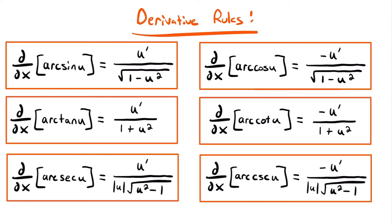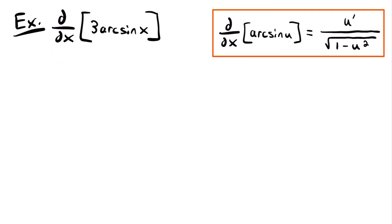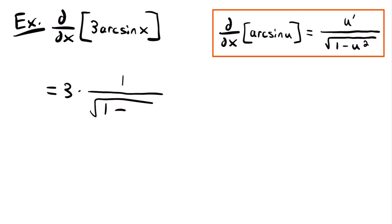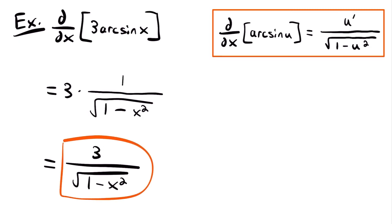Let's look at some examples. First: the derivative of 3 times arc sine of x. Using the derivative rule for arc sine, u equals x so u prime equals 1. We multiply by the constant 3, giving 3 times 1 divided by the square root of 1 minus x squared. Simplified, the derivative is 3 divided by the square root of 1 minus x squared.